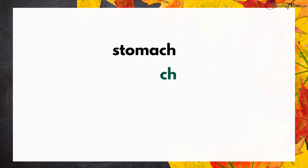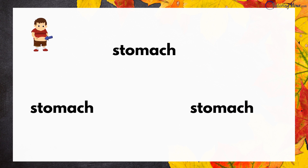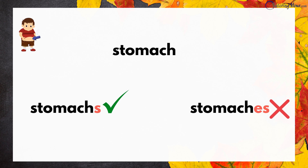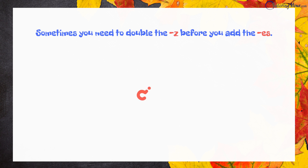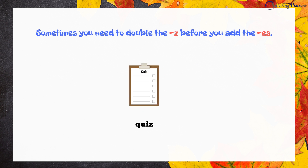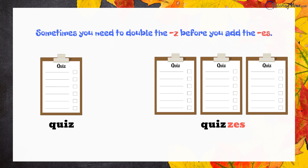But when the C-H sounds like a K, as in stomach, add an S and not an ES. Sometimes, you need to double the Z before you add the ES. Want to try that? Quiz, when many, is quizzes.